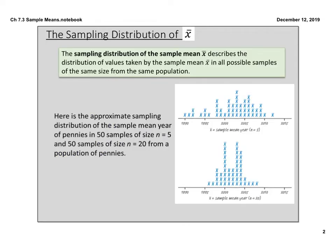The sampling distribution of x-bar describes the distribution of values taken by the sample mean x-bar in all possible samples of the same size from the same population. We've already talked about sampling variability — if you pull a different SRS repeatedly, you're going to get a slightly different mean each time. Those means together on a dot plot make up your sampling distribution.